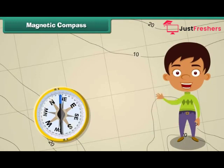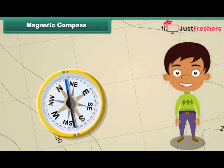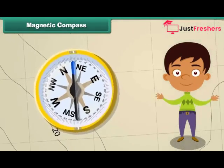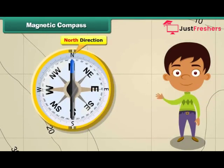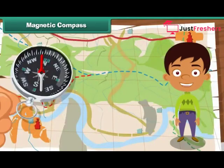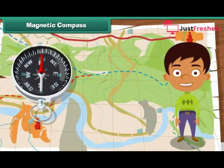A magnetic compass is a simple device which helps us to locate a place. It has a long needle. One end of the needle is marked N to represent the North direction. No matter where you are on Earth's surface, the needle of the magnetic compass will always point to the North direction. Thus, one can find all other directions in relation to North.